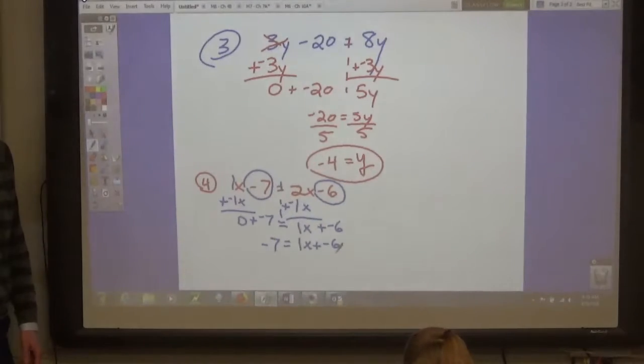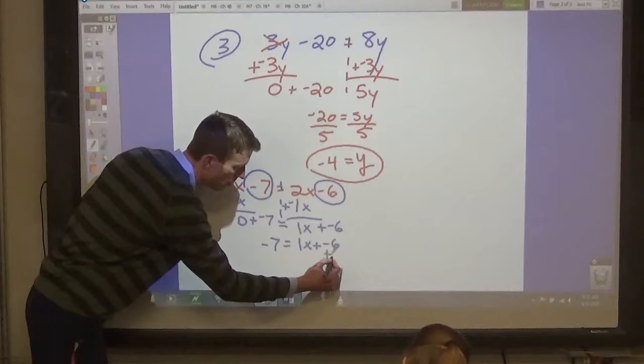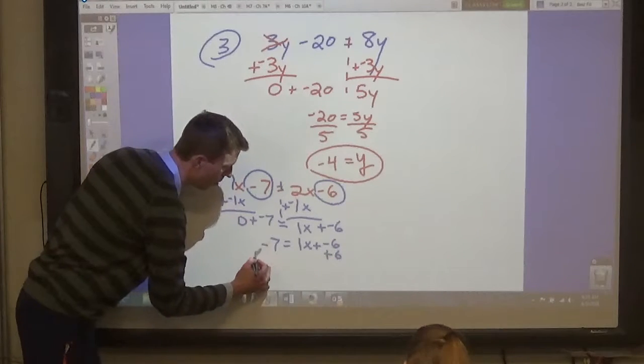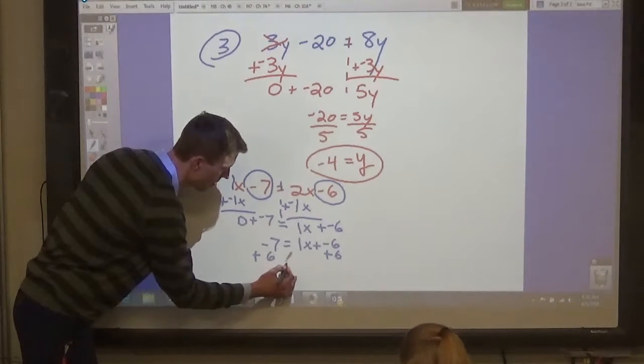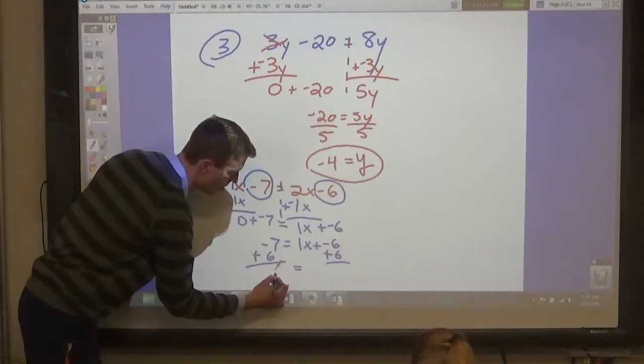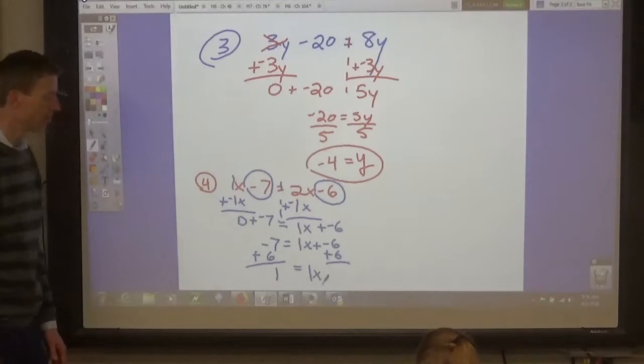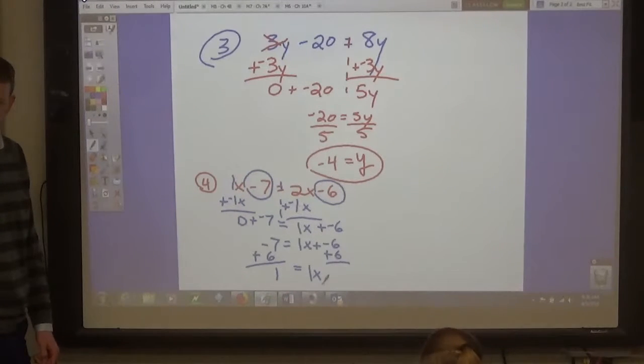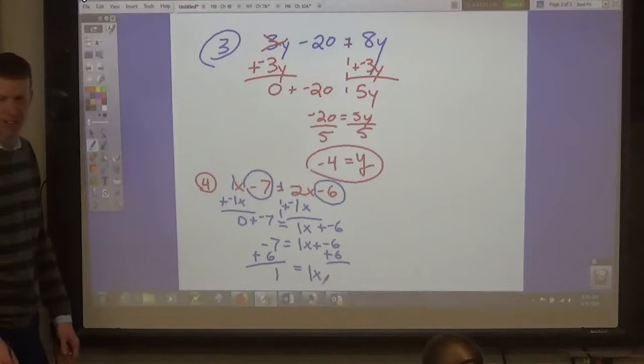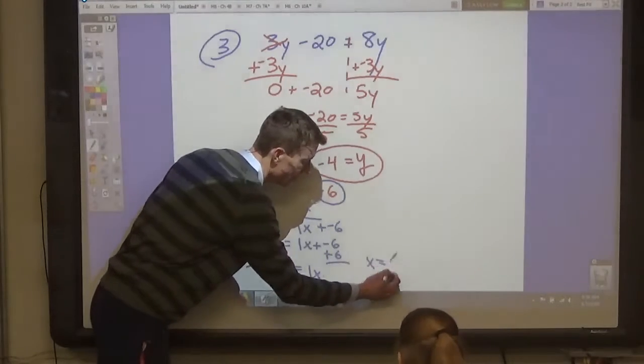So, negative 7 equals 1x plus negative 6. Now what? Add 6 to both sides. Okay, add negative 6 to both sides. Or add 6 to both sides. I mean. So, 1 equals 1x. If 1x equals 1, then and x equals 1.